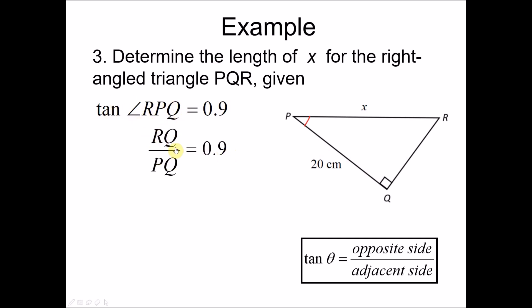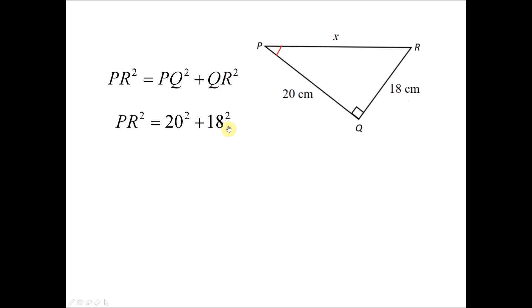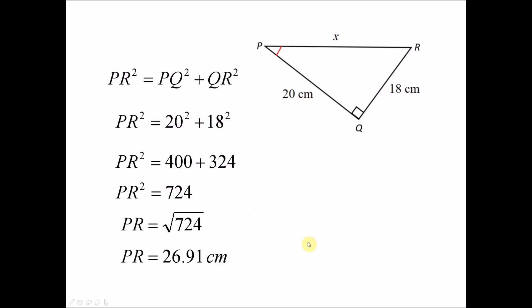Since we have the value of PQ equals 20, we substitute it in: RQ over 20 equals 0.9, so RQ equals 0.9 times 20, giving RQ equals 18. But we want to find X, which is the hypotenuse. Using Pythagoras theorem: PR squared equals PQ squared plus QR squared, so PR squared equals 20 squared plus 18 squared, giving 400 plus 324 equals 724. The square root of 724 gives X equals 26.91 centimeters.